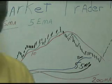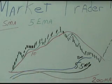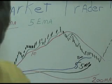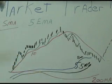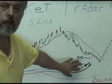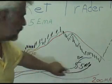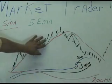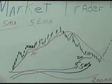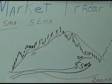We've covered the 200, the 55, the 20, the 5, and the 10. These are used all together. The 200 is used alone. The 55 and the 20 are used together to determine the speed of the market. And the 10 and the 5 are used to determine the momentum of the price.